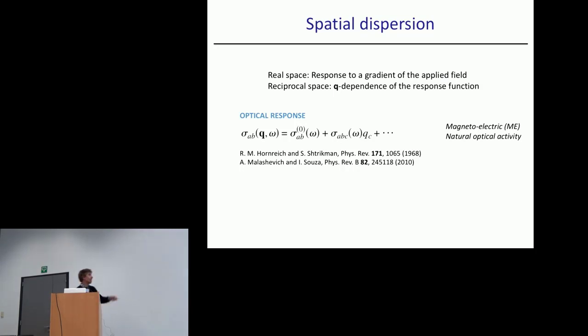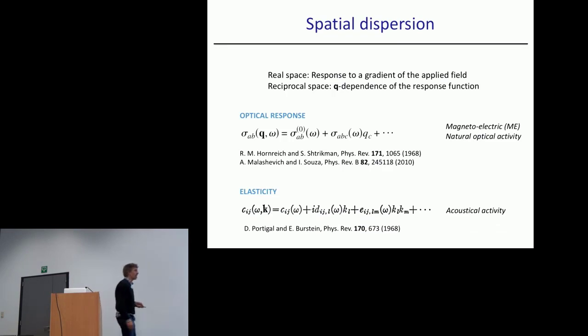Another context that is much less known is in elasticity. You can write the elastic tensor as a function of omega and K. This is the exact acoustic counterpart of natural optical activity. The first order dispersion in Q of the elastic tensor is called the acoustic activity tensor. These tensors at first order in Q have an odd number of indices, so they're only active in materials that break inversion symmetry.